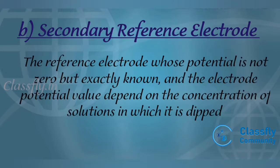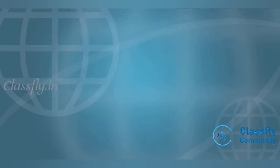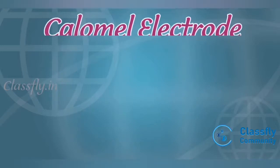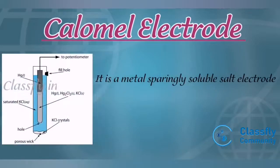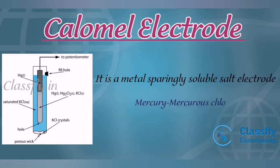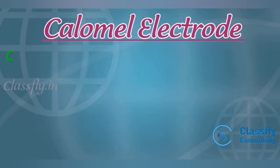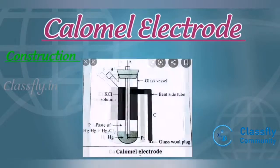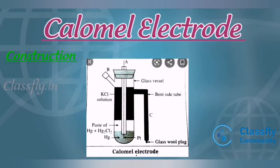For example, the calomel electrode. The calomel electrode is a metal-sparingly soluble salt electrode. It is used as a secondary reference electrode to determine the standard potential of an electrode. It is also known as the mercury-mercurous chloride electrode.